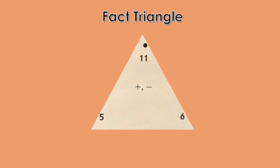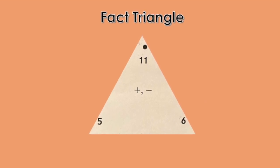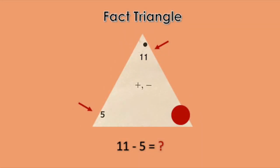To practice subtraction, we cover one of the numbers in the bottom corner. For subtraction, we always start with the number by the dot. So we take 11 and subtract 5. Do you know the answer? You were correct if you knew the answer was 6. This fact triangle shows us that 11 minus 5 equals 6.